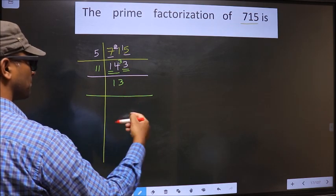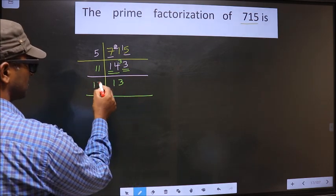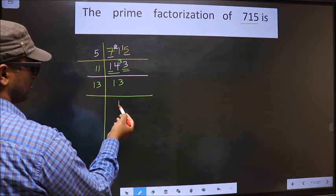Now here we have 13. 13 is a prime number, so we take 13×1=13. We got 1 here.